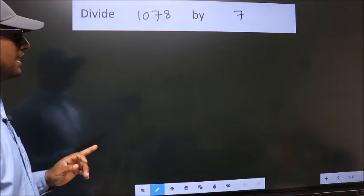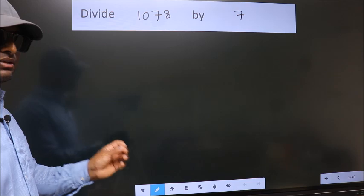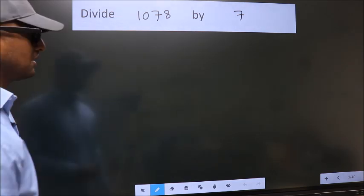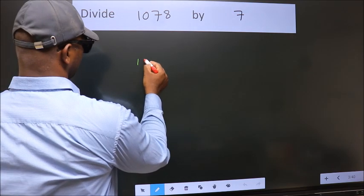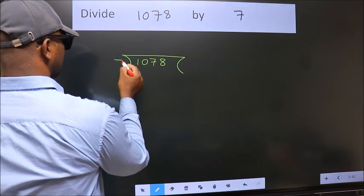Divide 1078 by 7. To do this division, we should frame it in this way. 1078 here, 7 here.